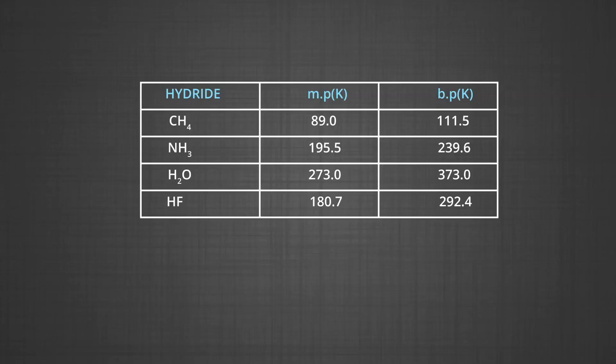Now let us compare the boiling points: methane 111.5 K, ammonia 239.6 K, water 373.0 K and hydrogen fluoride 292.4 K. The melting and boiling points of hydrides of group 14 increase with molecular mass, mainly because as the size of group 14 elements increases, the number of electrons also increases, and as a result van der Waals forces also increase.